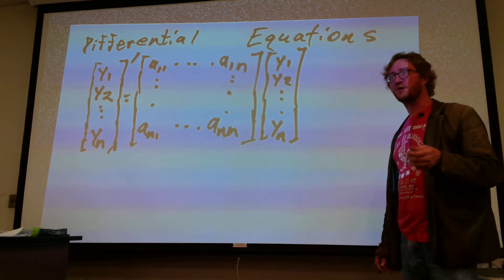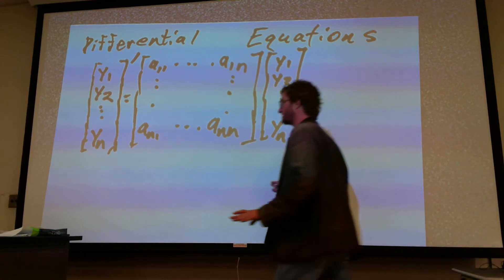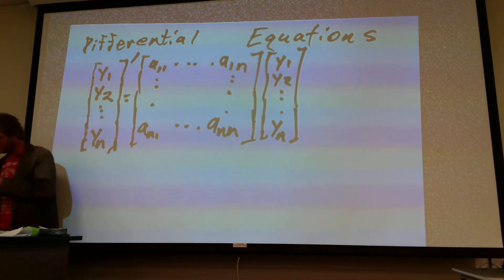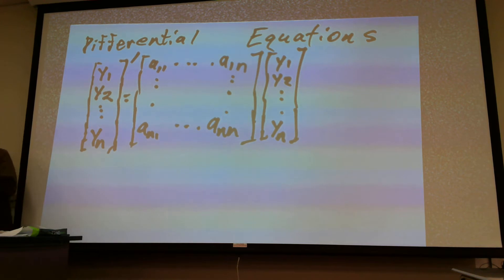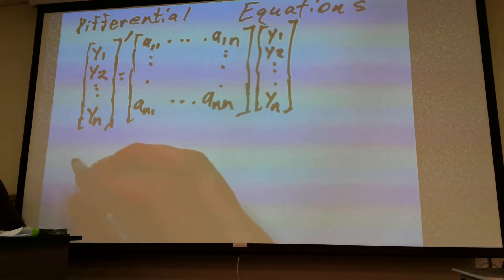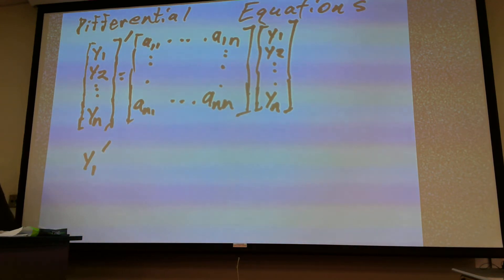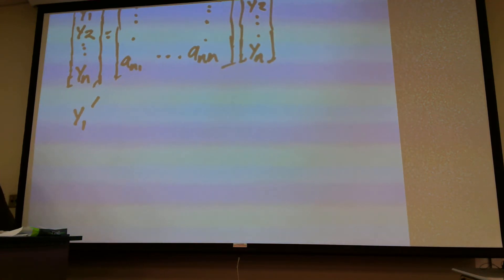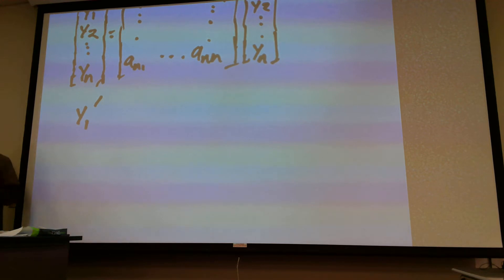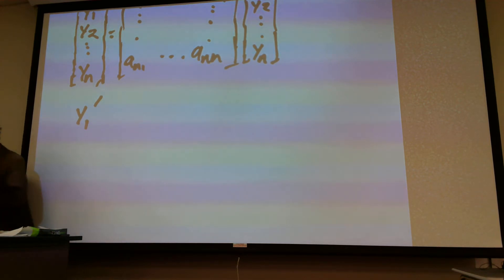Let's go ahead and start with an example — this is the easiest way to get this done. We'll stick with a 2 by 2 system, not a second order derivative, but a 2 by 2 system.